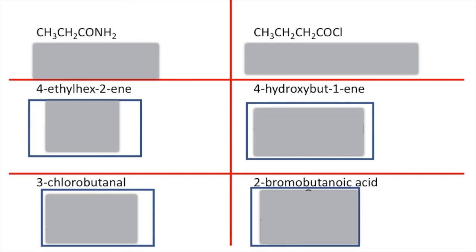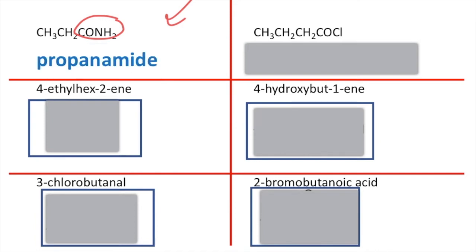Moving on to the next page — top left we have a three carbon chain and it's an amide with the CONH₂, so our name is going to be quite straightforward: propanamide.